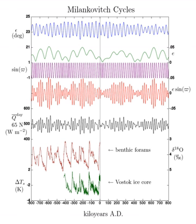Unsplit peak problem: Even the well-dated climate records of the last million years do not exactly match the shape of the eccentricity curve. Eccentricity has component cycles of 95,000 and 125,000 years.